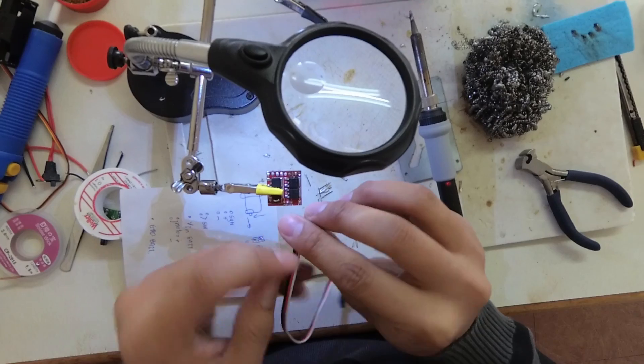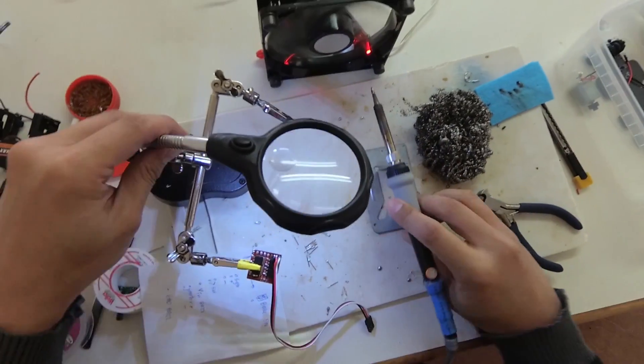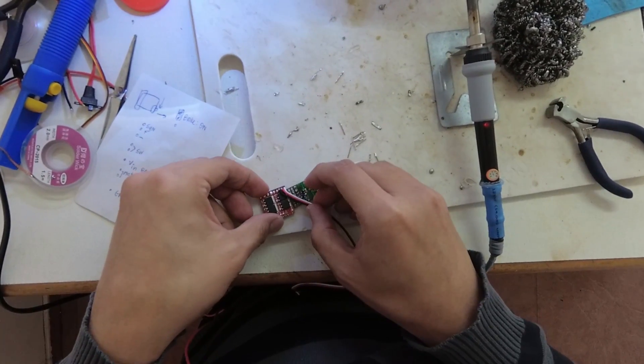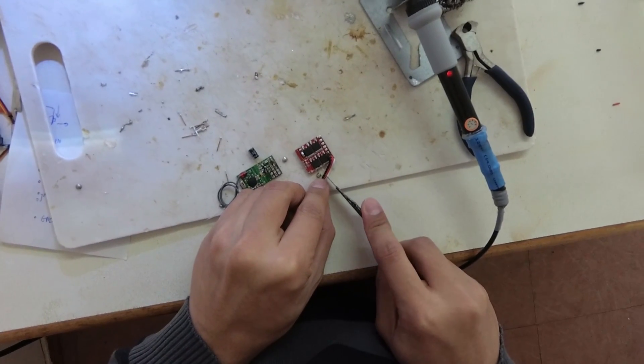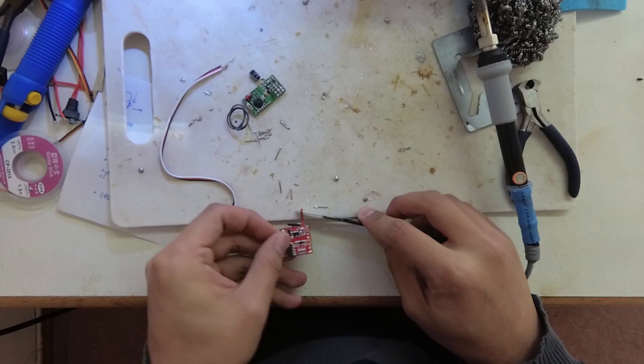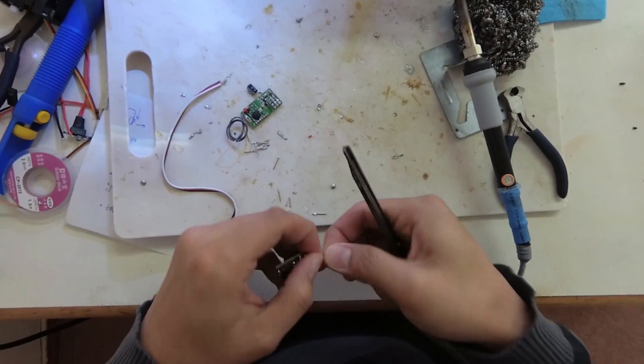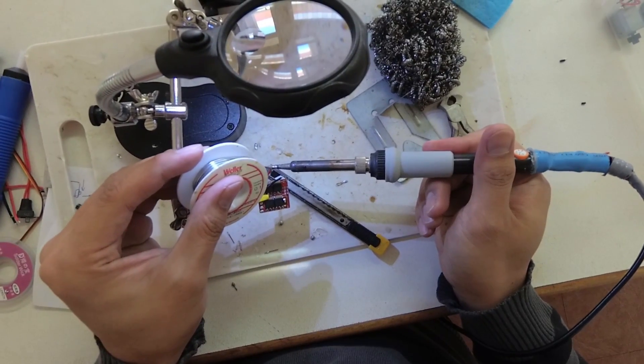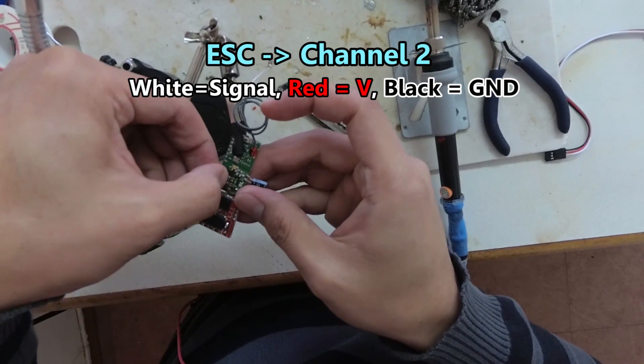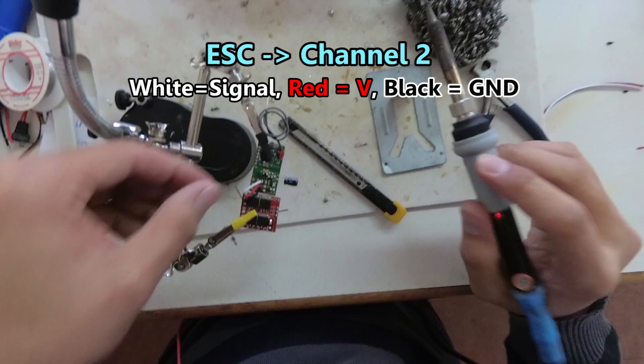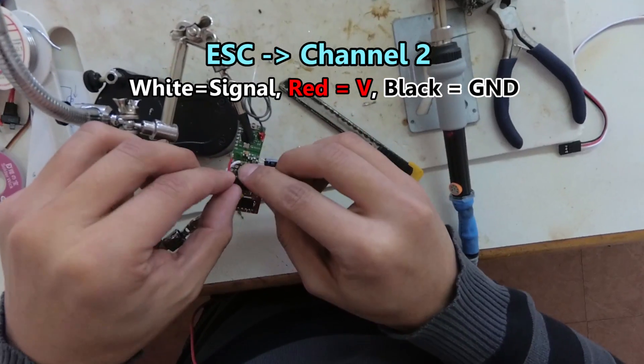Now put the ESC and receiver together, starting from the 3 wires from ESC to receiver. Measure and cut the wires just enough to connect 2 boards together. Strip, tin, and solder them onto channel 2 on the receiver. White is signal, red is positive, and black is the ground.